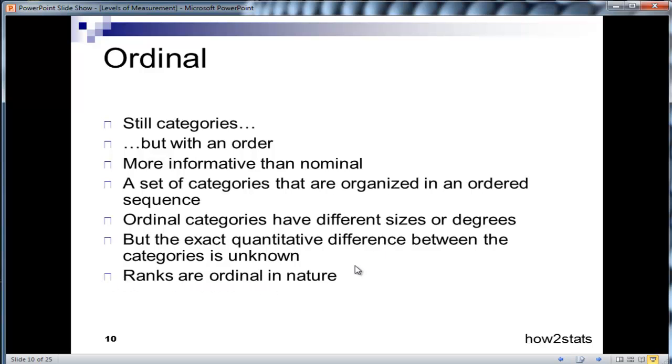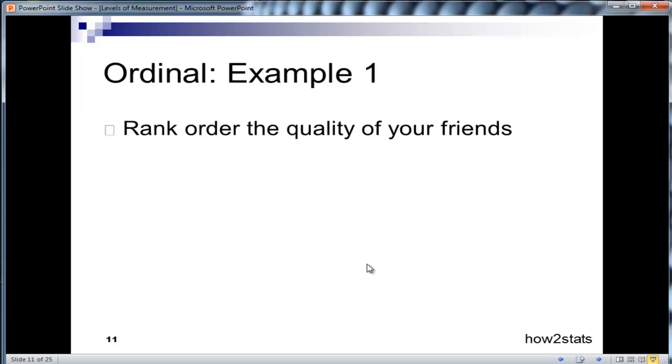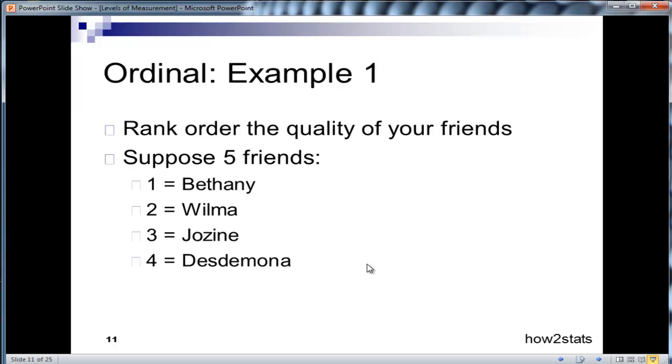Ranks are ordinal in nature. So let's look at an example. Rank order the quality of your friends. Now let's suppose a lucky person had as many as five friends. And the first friend, which was their best friend, ranked number one, is named Bethany. And the second favorite friend is named Wilma. Third favorite friend, good old trusty Josine. Fourth, Desdemona. And five, Leticia. Now, these are rank ordered friends from best friend to least favorite friend, Bethany to Leticia.